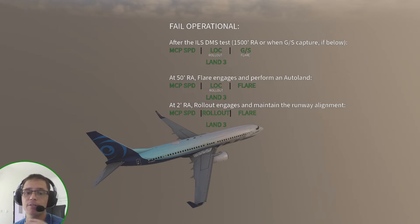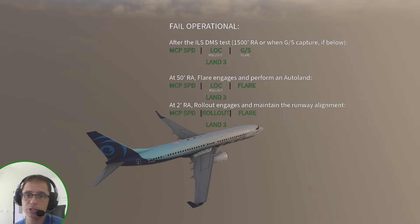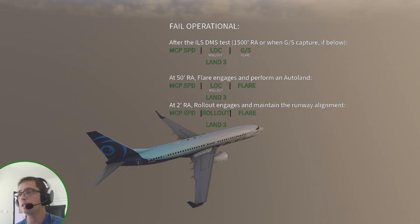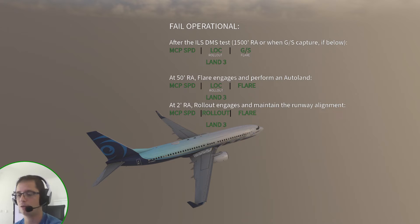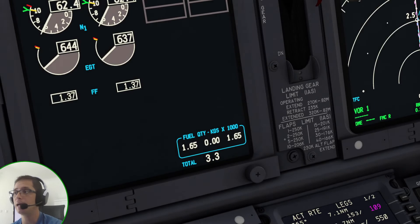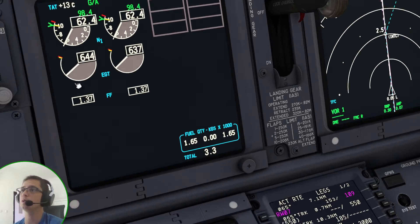At 50 feet, flare will engage and flare the airplane. When the airplane is about to touch down, rollout mode will engage and keep the runway alignment. Once the airplane is fully stopped, or once you want to taxi by yourself, disengage autopilot and continue taxiing. Let's go to the airplane and do it now.